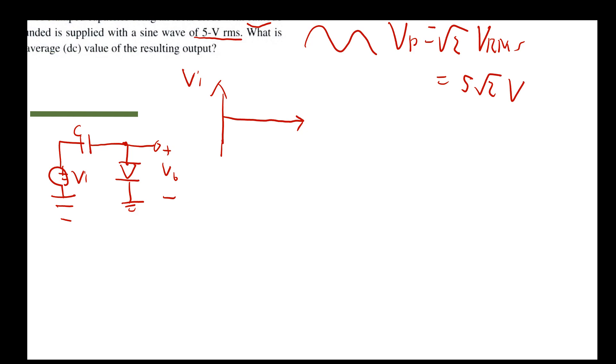or 5 root 2 volts. So that means the maximum value of the sine wave will be 5 root 2. And because it's being fed to the capacitor, this is what the capacitor is receiving. Again, the maximum is 5 square root of 2. The minimum is negative 5 square root of 2.